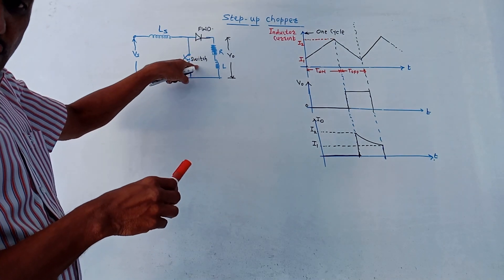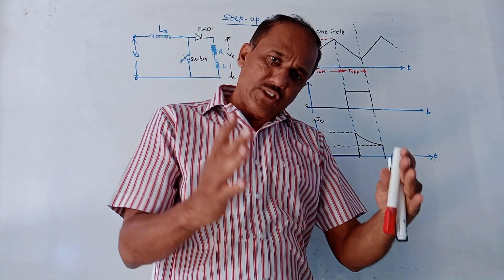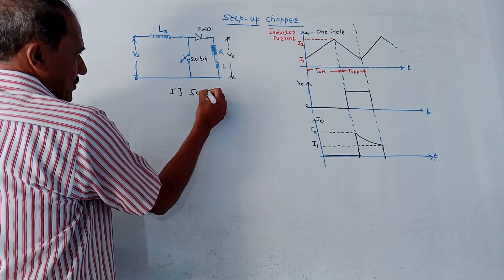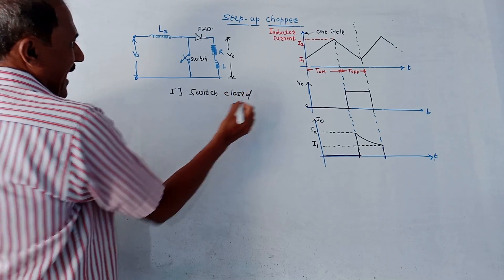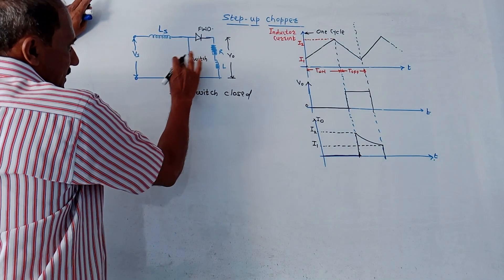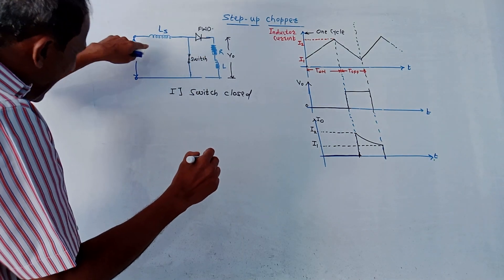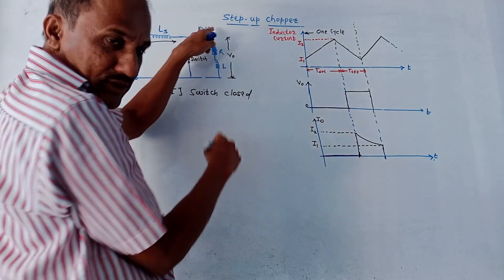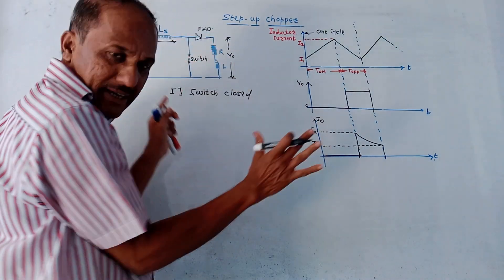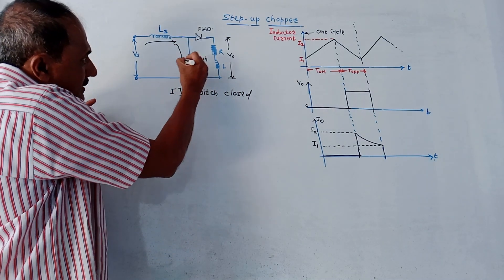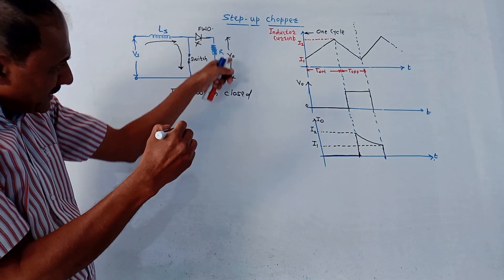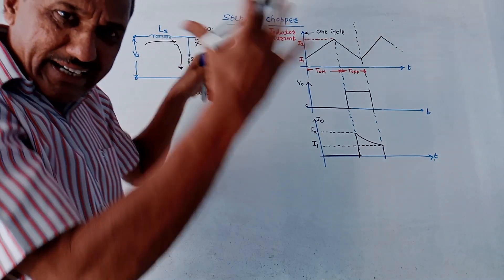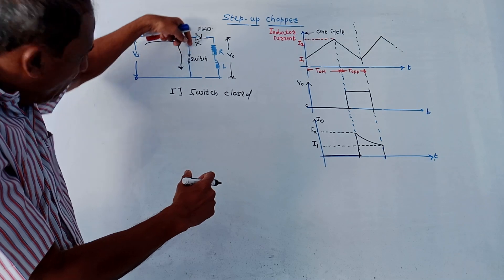There are two types of operations: one is when the switch is closed, and another when the switch is open. When the switch is closed, this part acts as a short circuit. Because of this, the entire current from the supply end passes through the short circuit path. The freewheeling diode and the RL load are not connected — no current flows through them. So whenever the switch is closed, it acts as a short circuit, and you get zero output voltage.